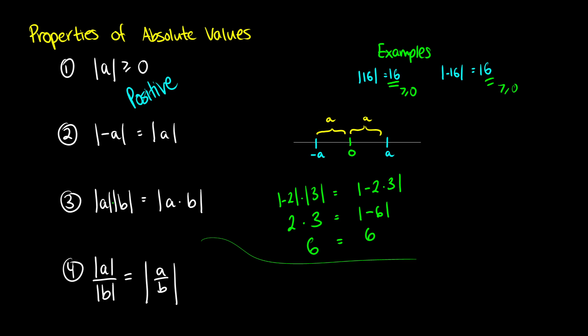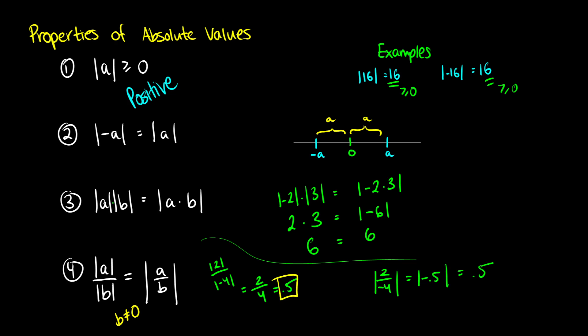This works the same way for division, with the one restriction that b cannot be zero, because you cannot divide a number by zero. So if we take 2 divided by the absolute value of negative 4, doing it separately gives us 2 divided by 4, which equals 0.5. Or we can take the absolute value of 2 over negative 4, which gives us the absolute value of negative 0.5, which outputs 0.5. Regardless of which method you use, you get the same result with any real numbers.